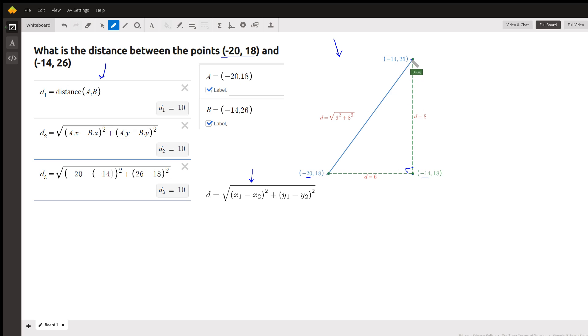And this vertical distance is the change in the y-values, 26 minus 18 is 8. And the Pythagorean theorem says that the hypotenuse squared equals the sum of the squares of the legs in a right triangle. So the distance would be the square root of the sum of the squares of the legs.